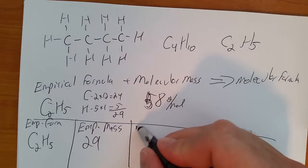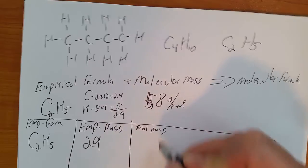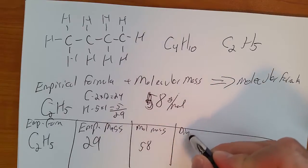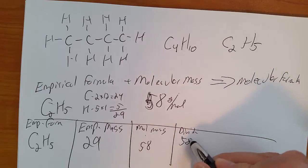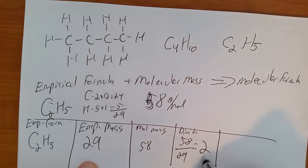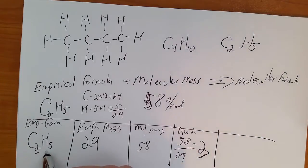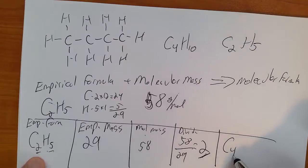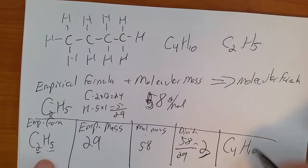Then we write out the molecular mass we've been given, which is 58, and divide. The molecular mass divided by the empirical mass gives us a 2. We're going to use this as a multiplier times these subscripts. So we multiply 2 times 2, gets C4, 2 times 5, H10, and that's the molecular formula.